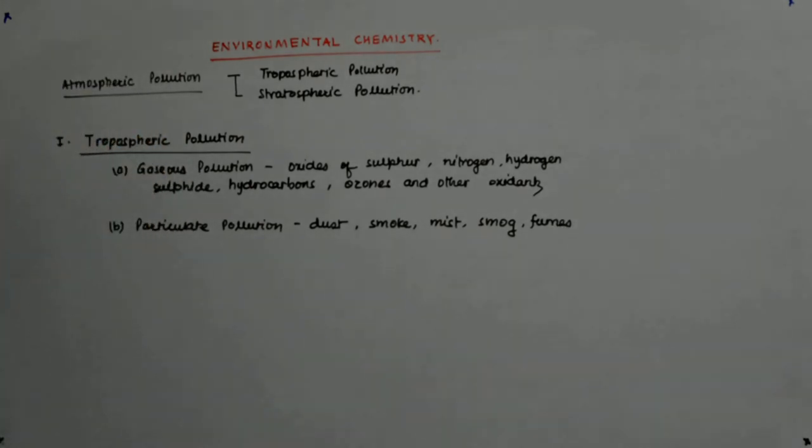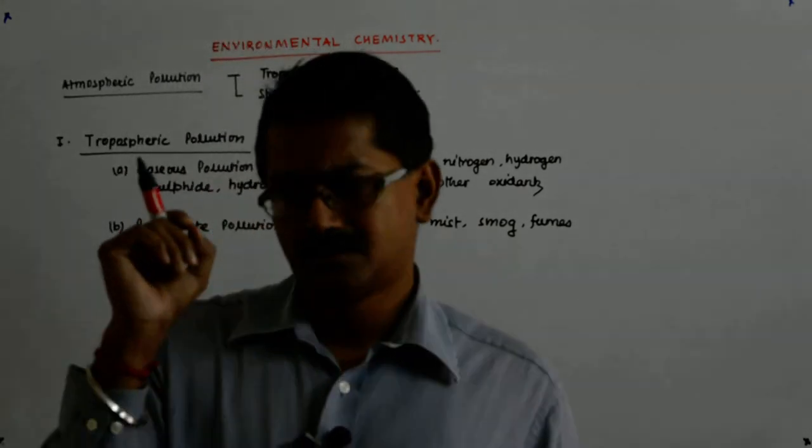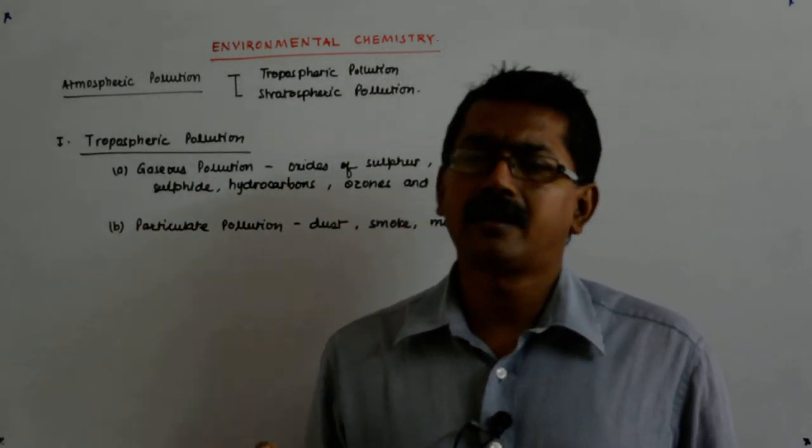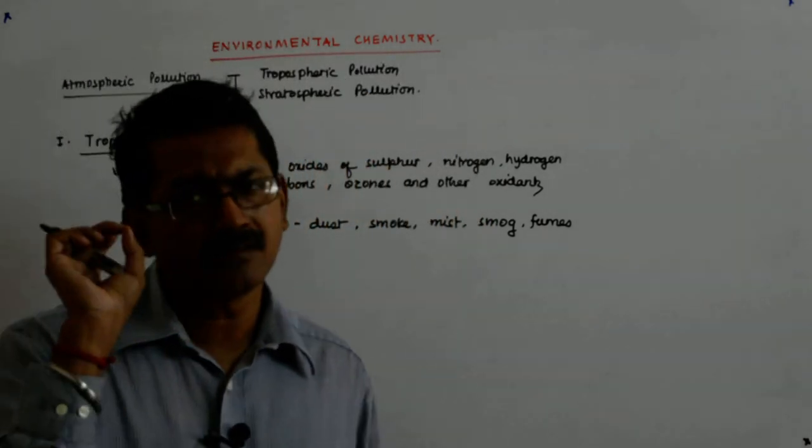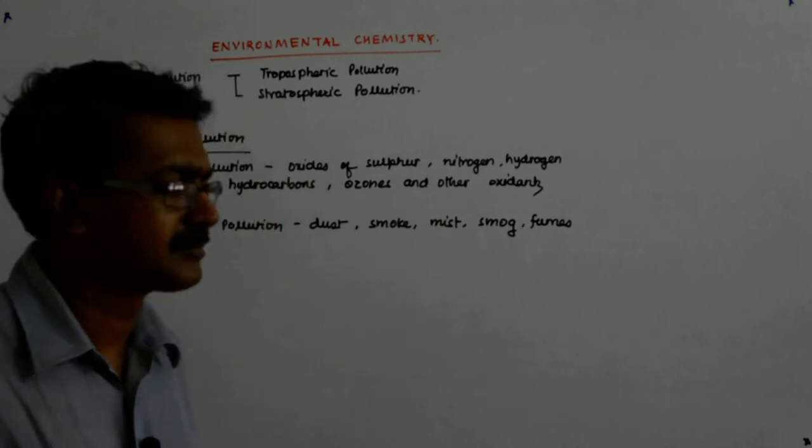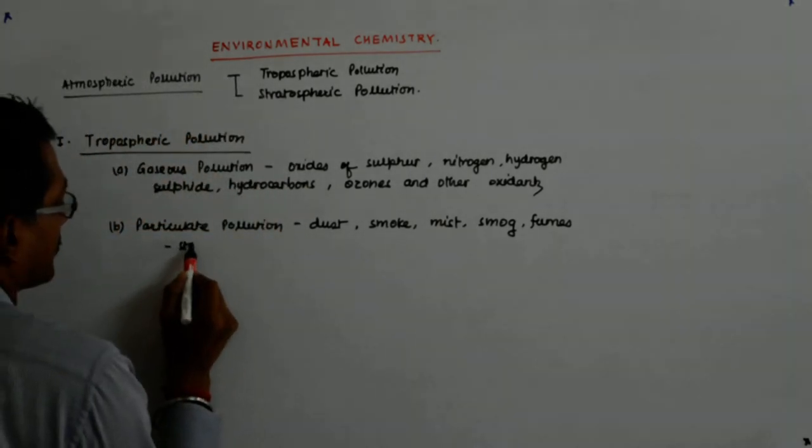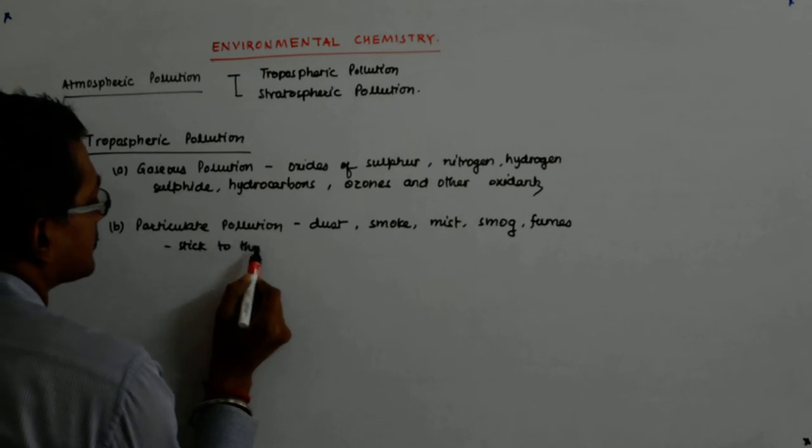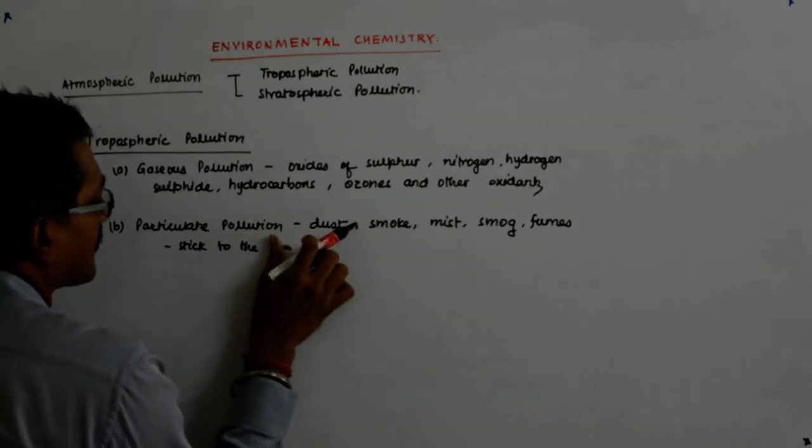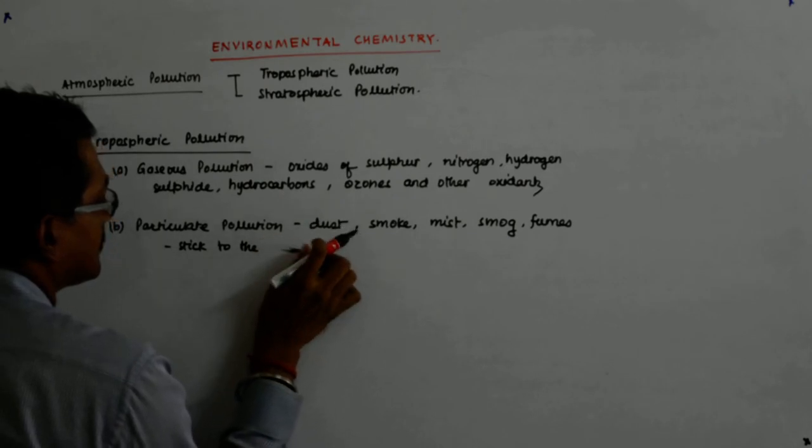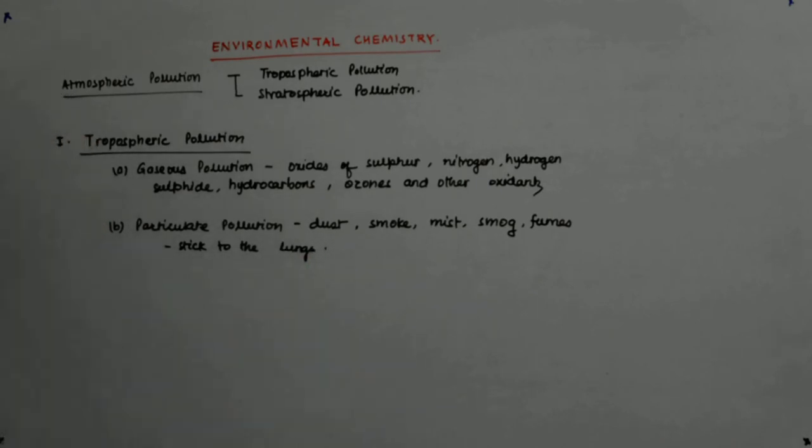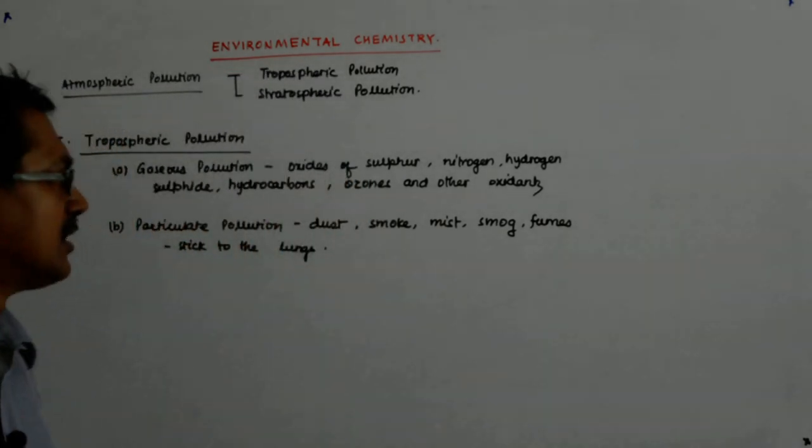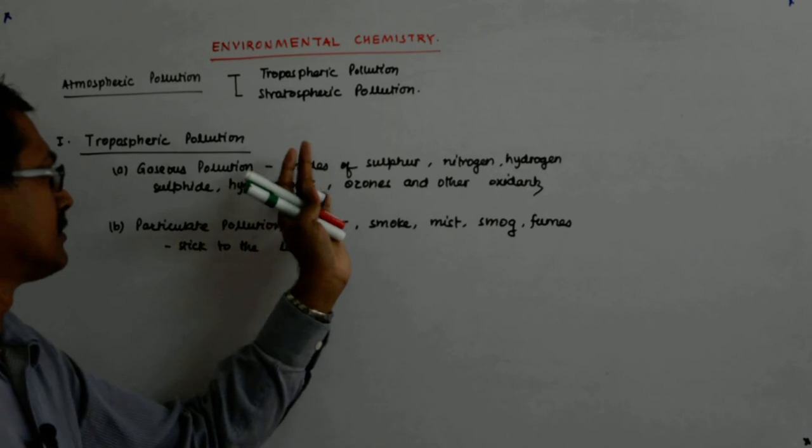Why are they called particulate? Because they have small particles which are either visible by eye or, if not visible by eye, when inhaled they have the property of sticking to the lungs. Their nature is particle nature, so they are quite bigger than these gases.